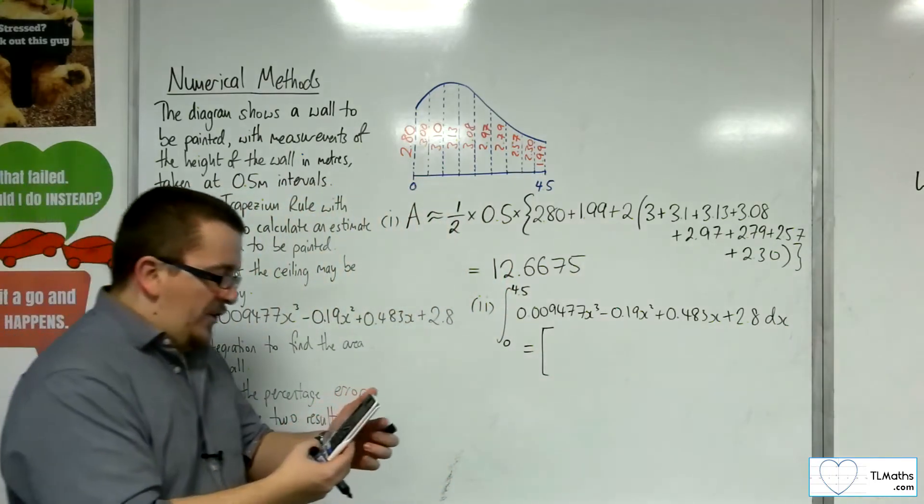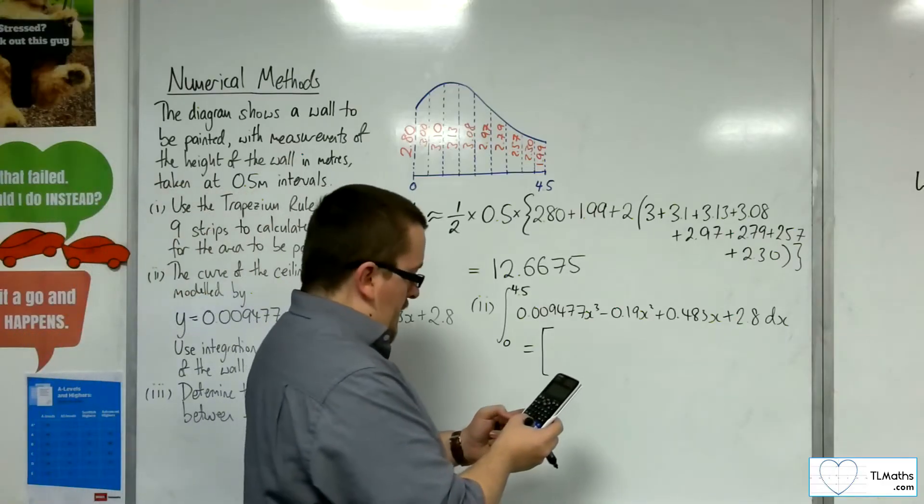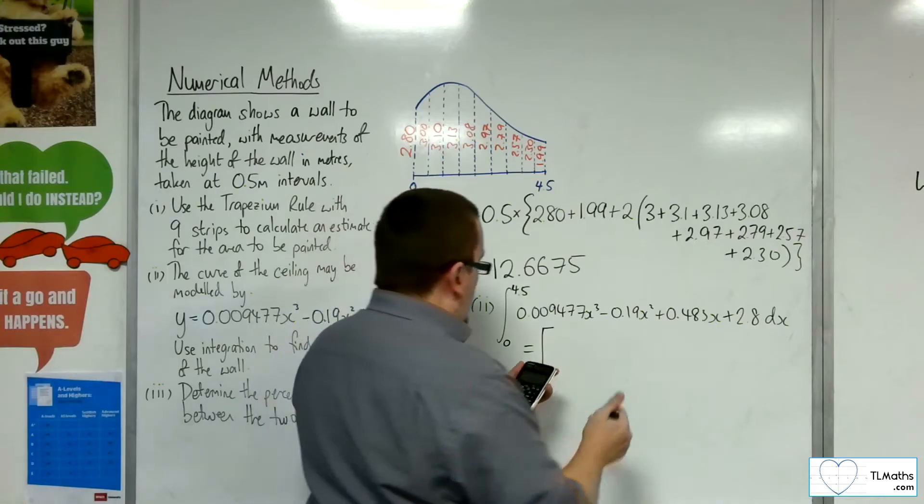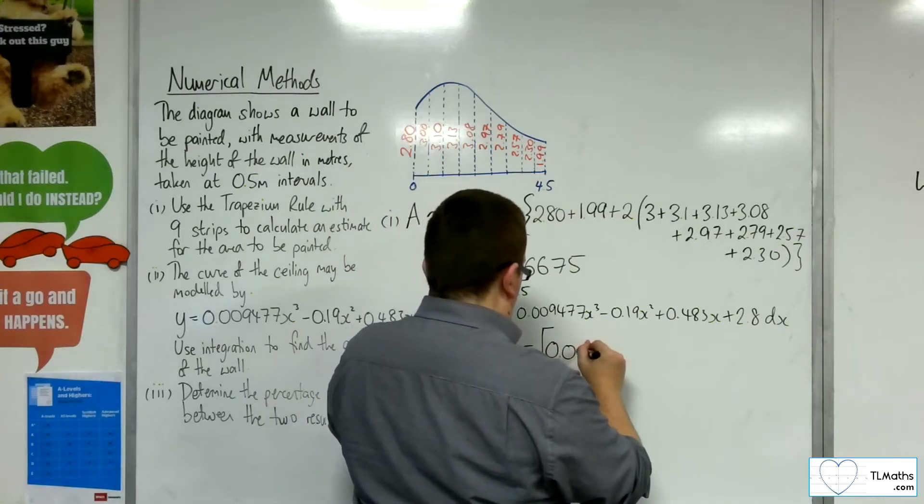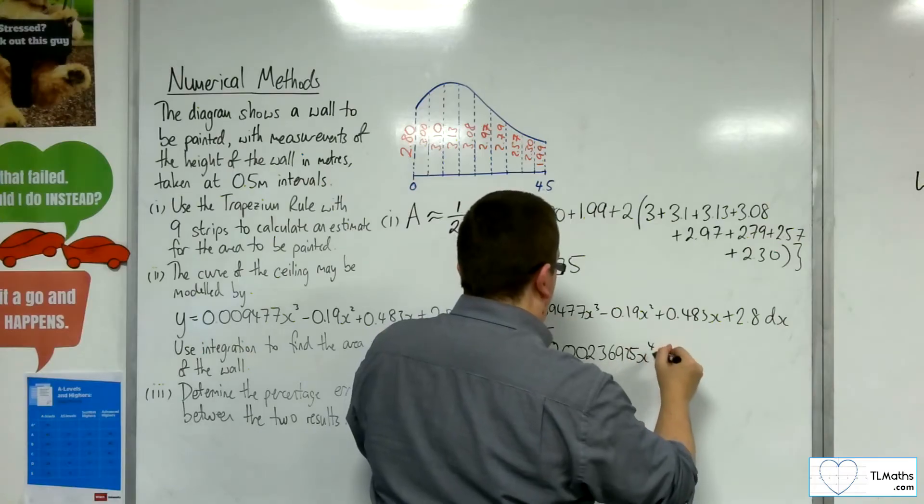0.009477x cubed, take away 0.19x squared, plus 0.483x, plus 2.8 dx. I want to add 1 to the power divided by the new power.